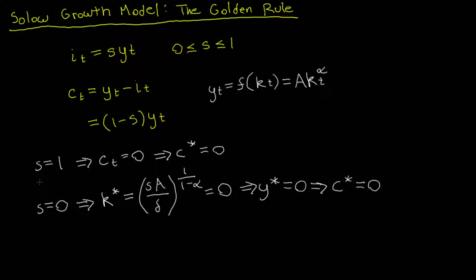To summarize: if we do nothing but save (S=1), consumption per capita equals zero — clearly not associated with the golden rule. So the golden rule savings rate must be less than one. On the other hand, if all we do is consume and don't save (S=0), capital is driven to zero in the steady state, we don't produce anything, and consumption is also zero. So we need a savings rate strictly greater than zero. The question is: which savings rate will that be?